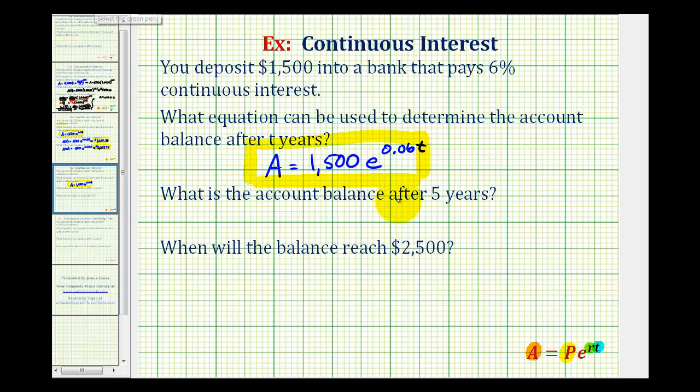Next we want to know the account balance after five years. So we'll substitute five for t. So we can say A(5) is equal to 1,500 times e raised to the power of 0.06 times five.